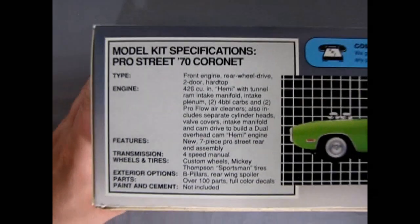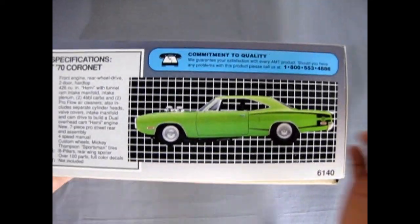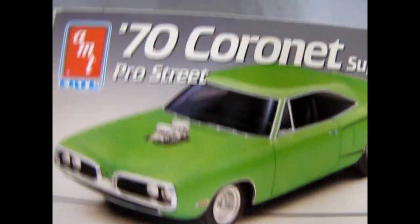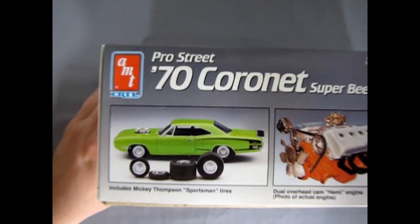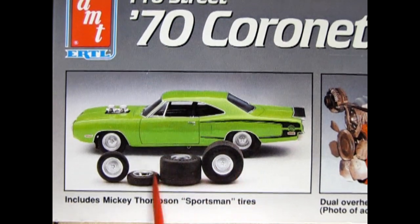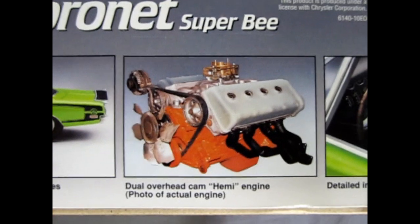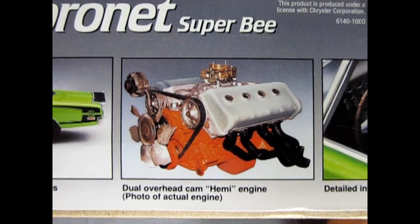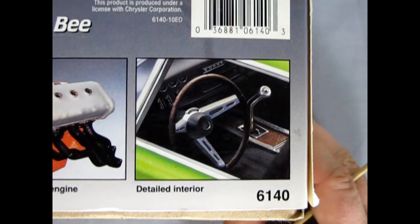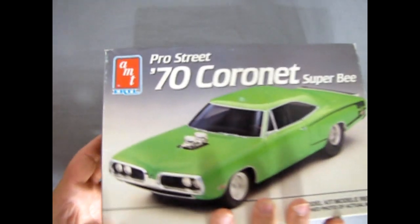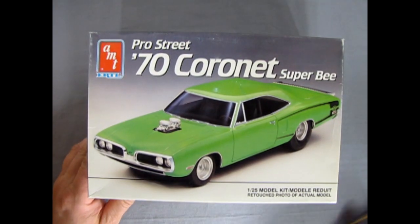Mmm so this car is really awesome looking. As you can see it's nice and sublime with a real slime green. And there's the end of course of the box but check out this. Can you dig it? Includes Mickey Thompson sportsman tires, big thick ones. Dual overhead cam Hemi engine, photo of actual engine, right on. And of course we have our detailed interior. Alright, now let's pull a lid off this bad boy and see what's inside.